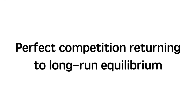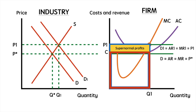Let's see why they can't maintain supernormal profits and how the firm returns to long run equilibrium. This level of supernormal profit is going to attract firms into the widget industry. The lack of barriers to entry means that these profits won't last for long as new firms enter the market. The first thing we need to do to figure out the impact is shift market supply as the new firms enter.